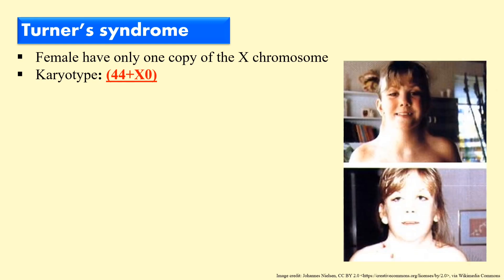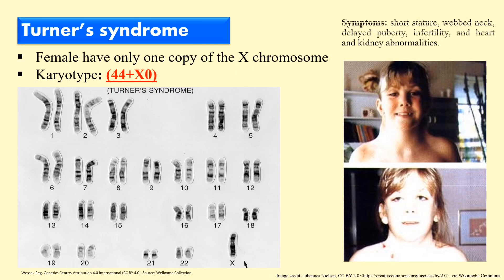Next is Turner syndrome. This is due to the absence of one X chromosome in a female individual. Normally a female has the karyotype 44 plus XX, but in Turner syndrome one X is missing, so the karyotype is 44 plus X (X0). In the karyotype you can clearly see there is only one X chromosome instead of the usual two. Due to the absence of one X chromosome, certain characteristics develop in females such as short stature, webbed neck, delayed puberty, infertility, and heart and kidney problems.